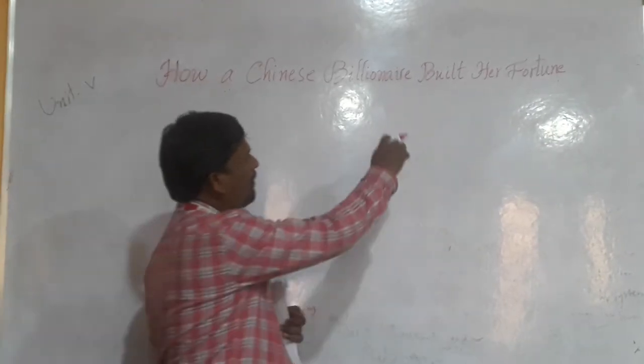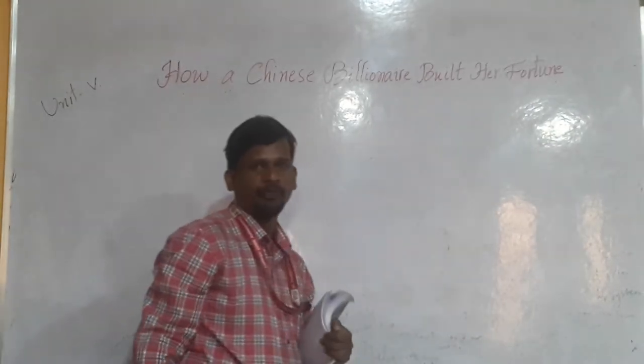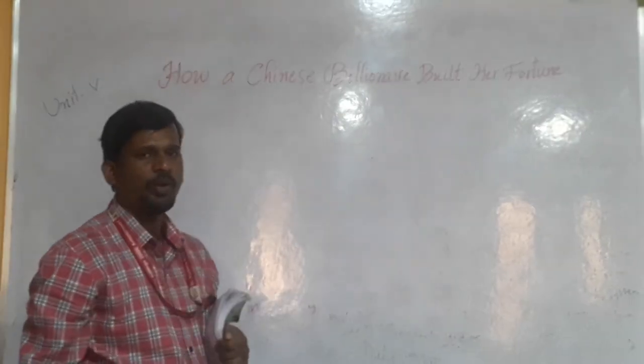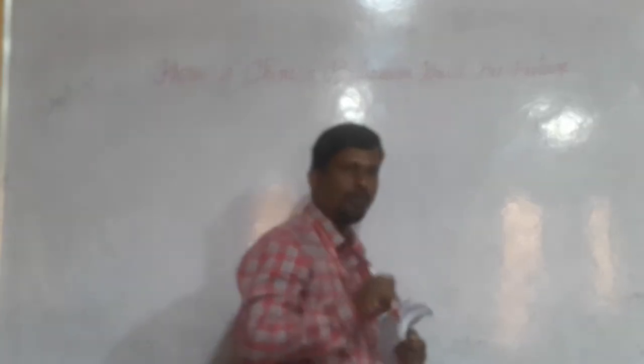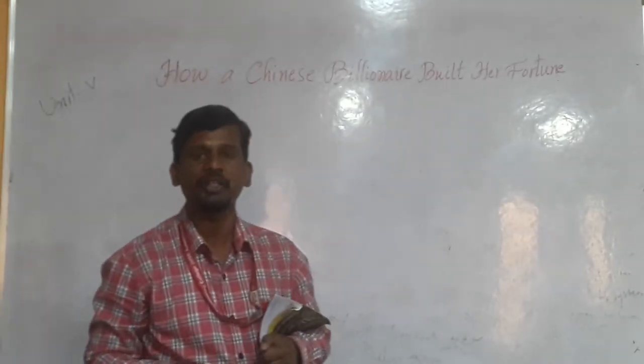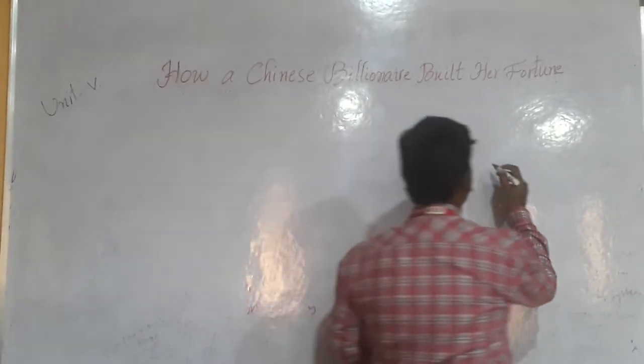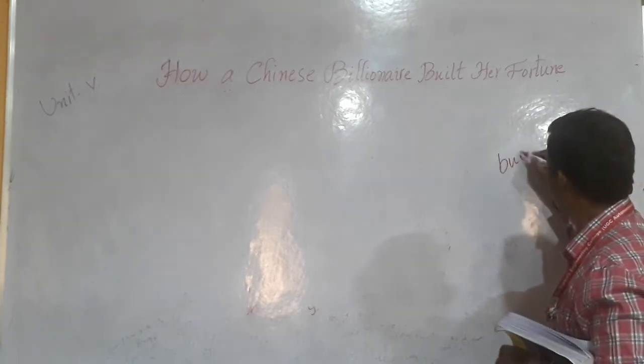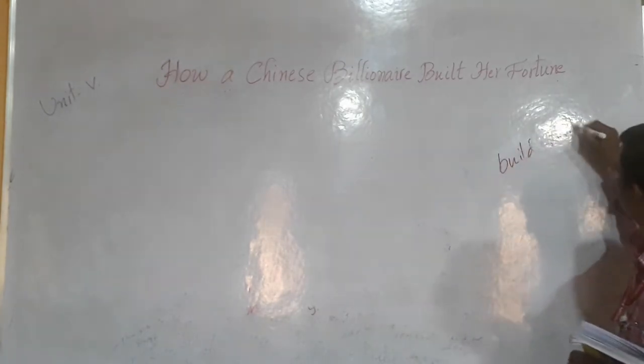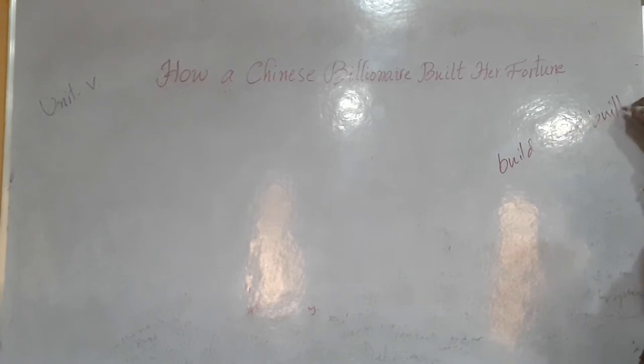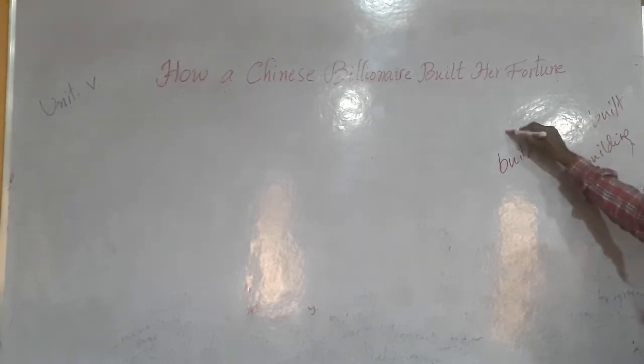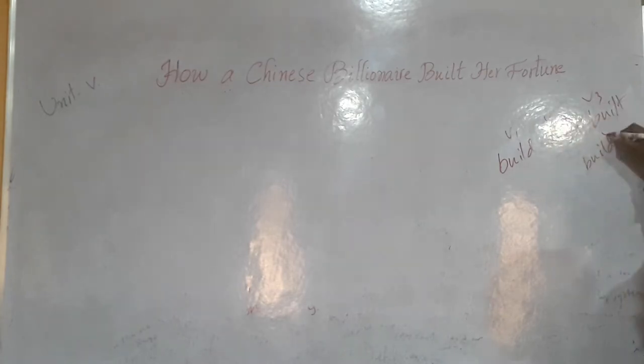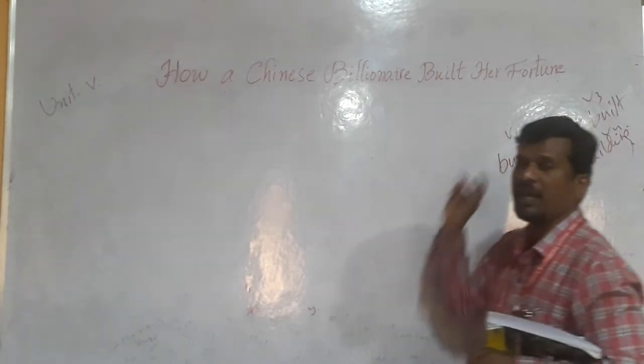Here, built is a verb form, it started with a capital. Built is a verb, how it is verb means here, it is indicating some action. You know that some verb forms are there like build, built, and built, like building. These are the verb forms, V1, V2, V3, and V4. That's why this is a verb.